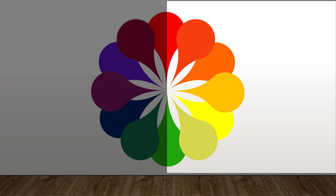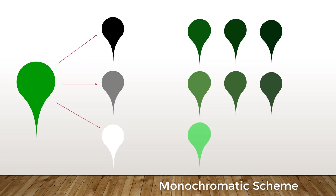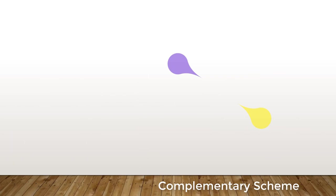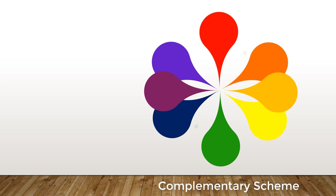Monochromatic scheme: you can create a monochromatic scheme by adding gray, white, or black to a hue. You can see a monochromatic scheme for green. Complementary colors: colors sitting across each other on the color wheel create complementary colors — purple and yellow, red and green, blue and orange, and so on. This color scheme gives visual brightness to the colors.